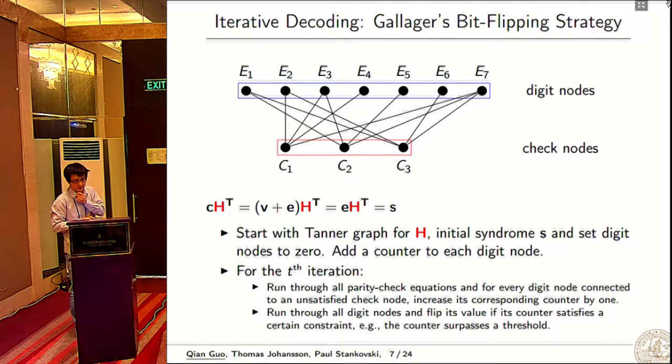In this slide we discuss Gallagher's bit flipping strategy. After computing the syndrome, and because we know this sparse matrix H, we can compute this Tanner graph. These are check nodes and these are digit nodes.